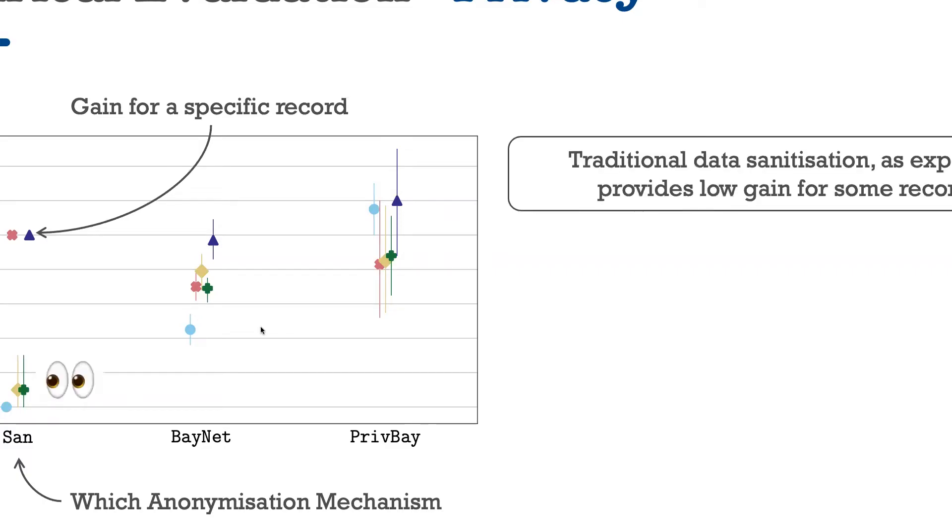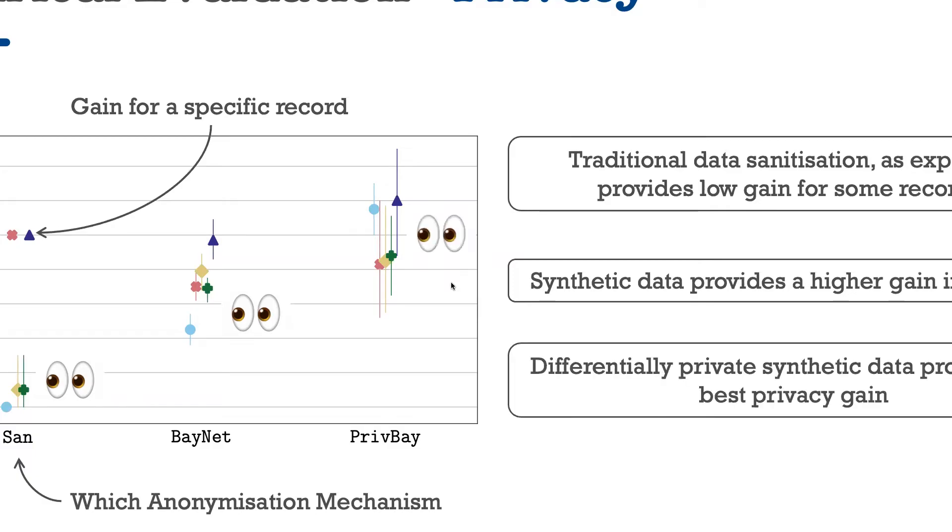What we find is that traditional data sanitization, as expected, provides low gain for some records. Publishing synthetic data already provides a higher gain in privacy. And differentially private synthetic data publishing provides us with the best privacy gain.